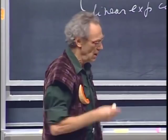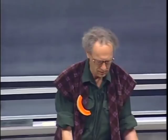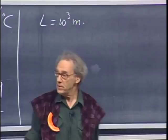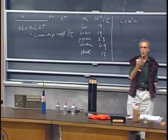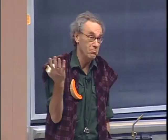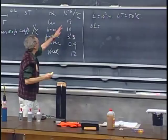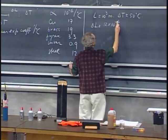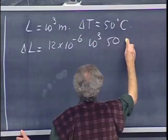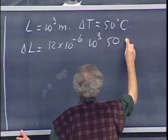Let us look at the expansion of a railroad. We take a stretch of rail which is 1000 meters, made of steel or iron, and we compare a cold winter day at minus 15 degrees centigrade with a hot summer day at plus 35 degrees centigrade, so delta T would be about 50 degrees centigrade. Delta L equals 12 times 10 to the minus 6, times 10 to the third, times 50, and that is about 0.6 meters, which is about 60 centimeters.